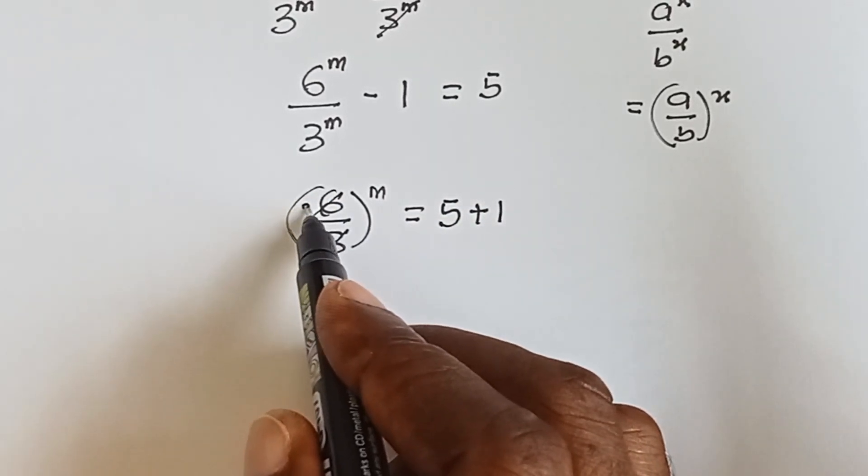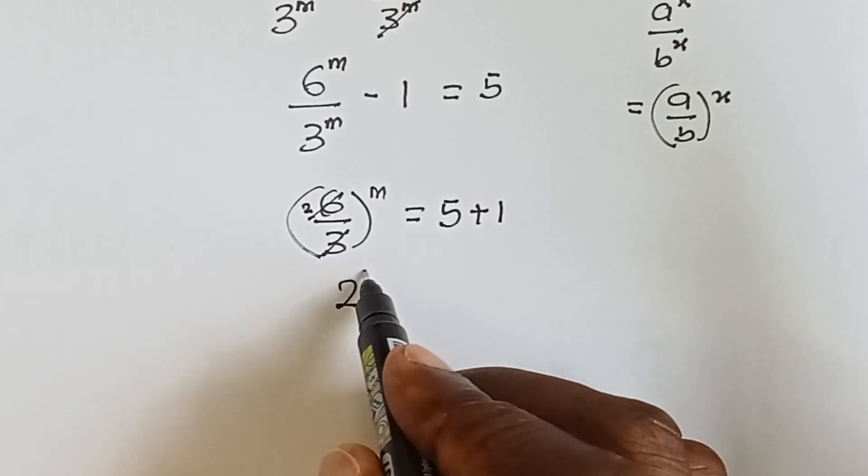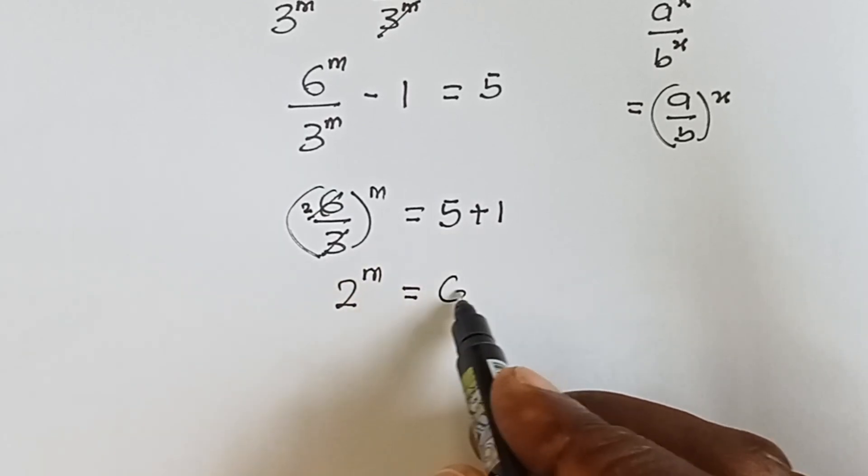6 into 3 is 2, so we have 2 raised to power m equals to 5 plus 1, which is 6.